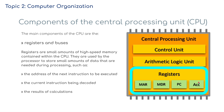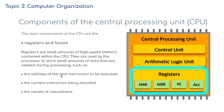And we've got the registers. Registers are small amounts of high-speed memory contained within the CPU. They're used by the processor to store small amounts of data that are needed during processing, such as the address of the next instruction to be executed, the current instruction being decoded, and the results of the calculations.